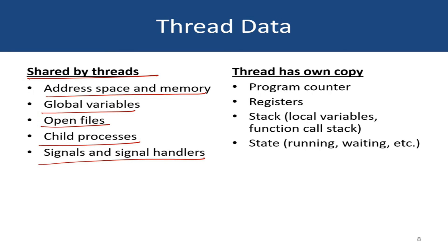However, every thread has its own copy of program counter, its own register file, and its own program stack — to keep track of local variables and function calls according to the logic that the thread is executing. Similarly, every thread may be in a different state. Just as processes can be in the running state or the waiting state and so forth, it is possible that thread 1 is in the running state while thread 2 is in the waiting state. So every thread has its own copy of state.